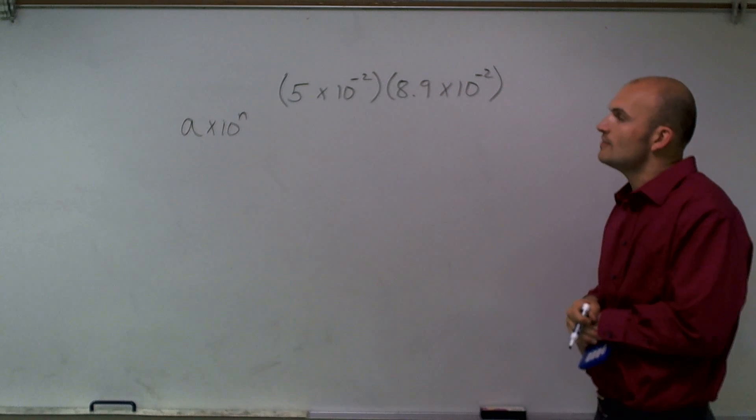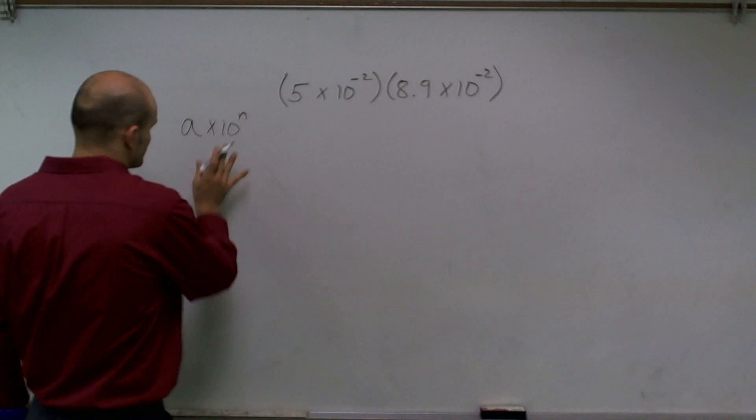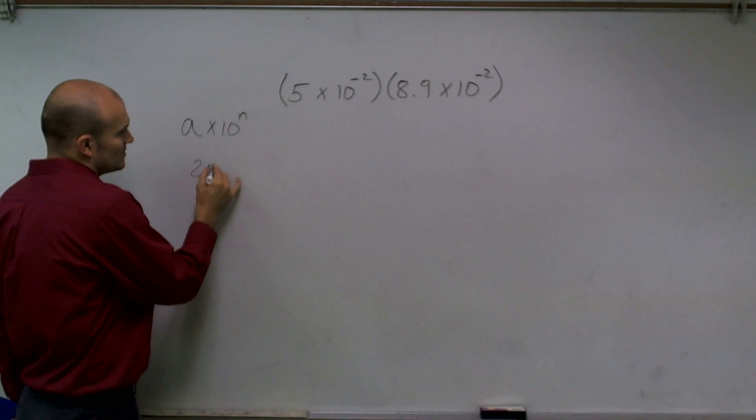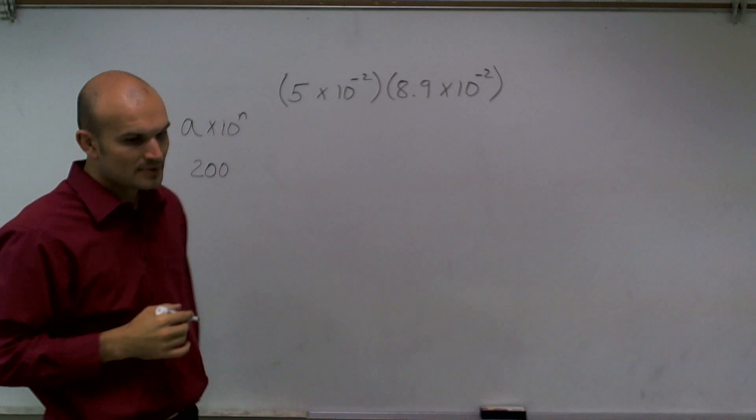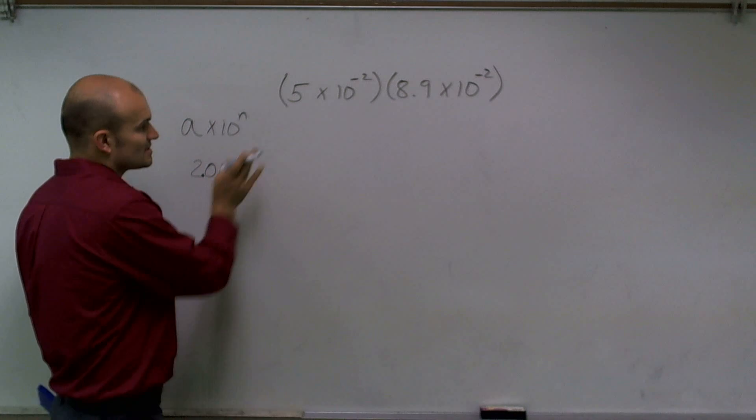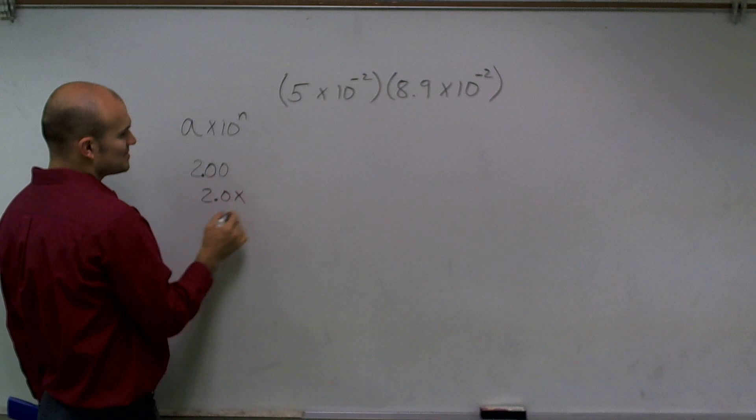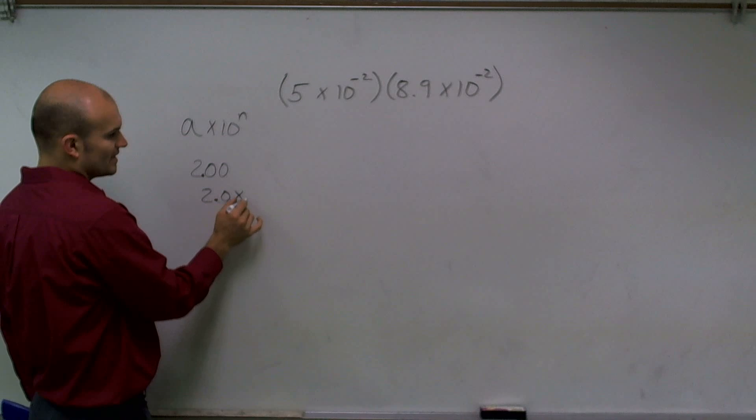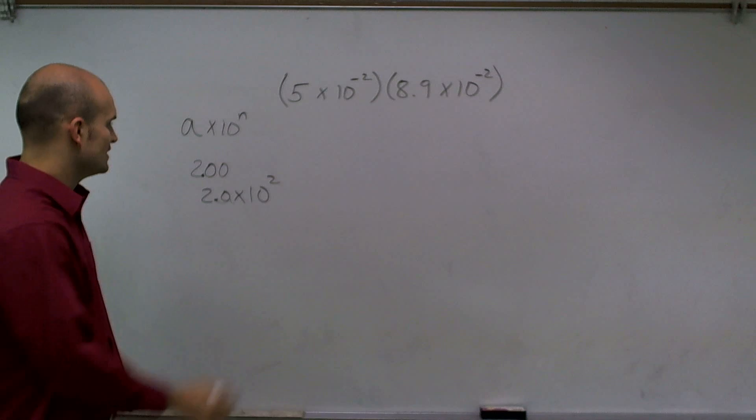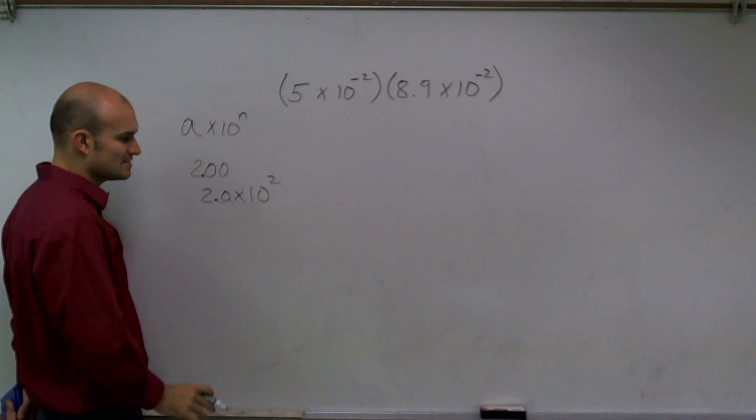We have two numbers here in scientific notation. The important thing is they're to the negative power. Let me show you an example: if I wanted to write 200 in scientific notation, remember 200 is not between 1 and 10, so I write 2.0 times... How many times do I move this decimal point to get 200? Two spots. So it's 2.0 times 10 to the second, because I'm moving it two units in the positive direction.